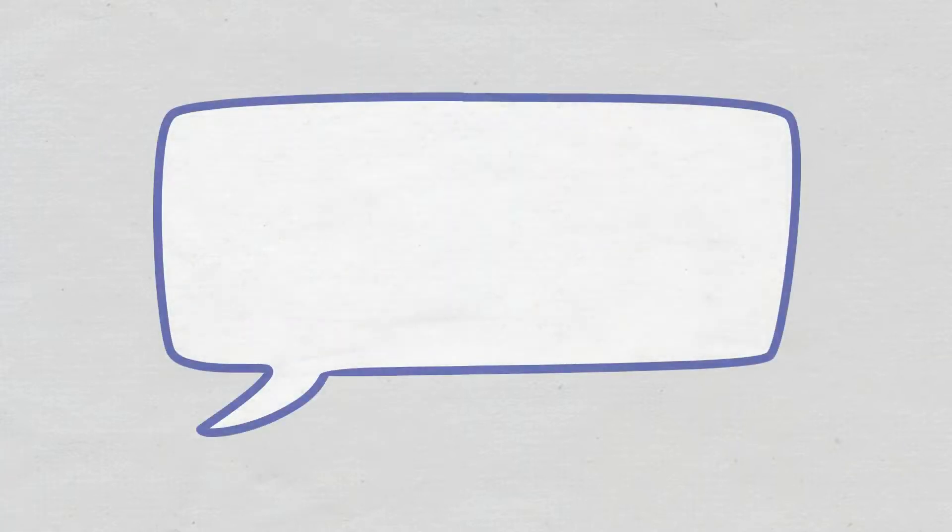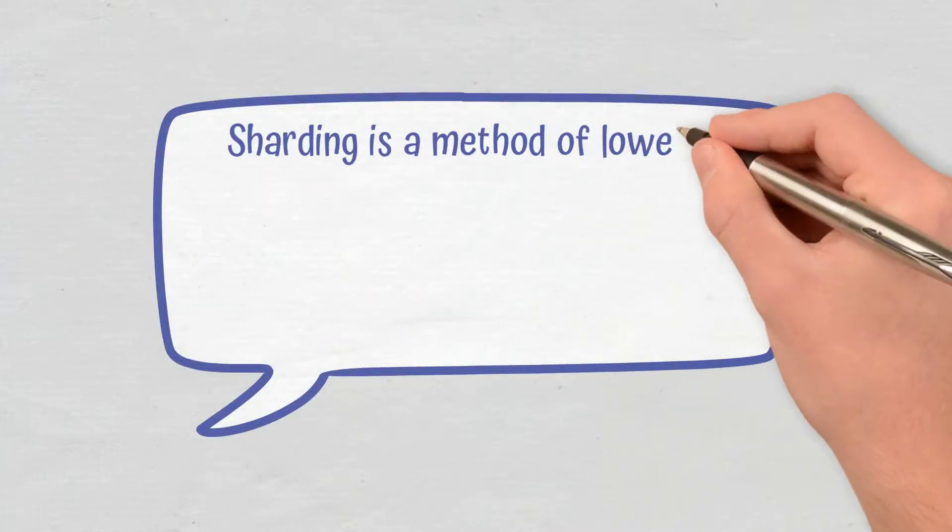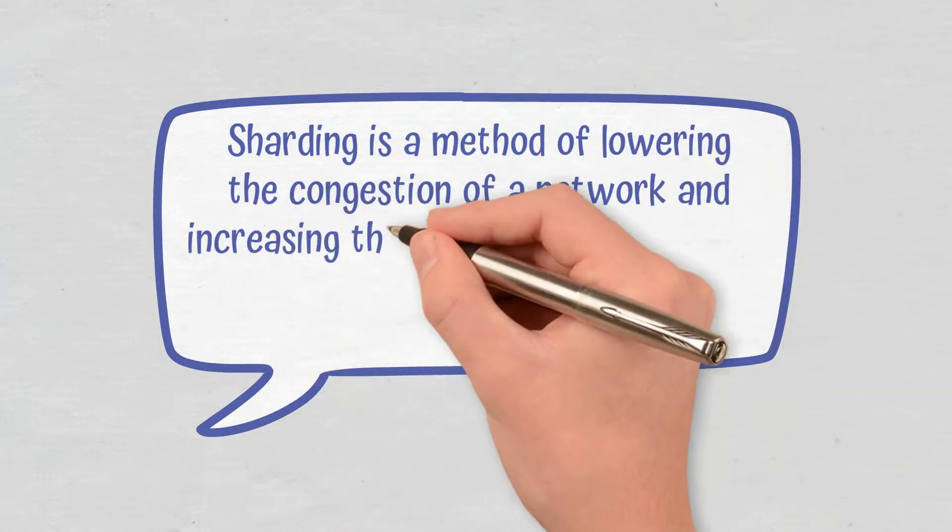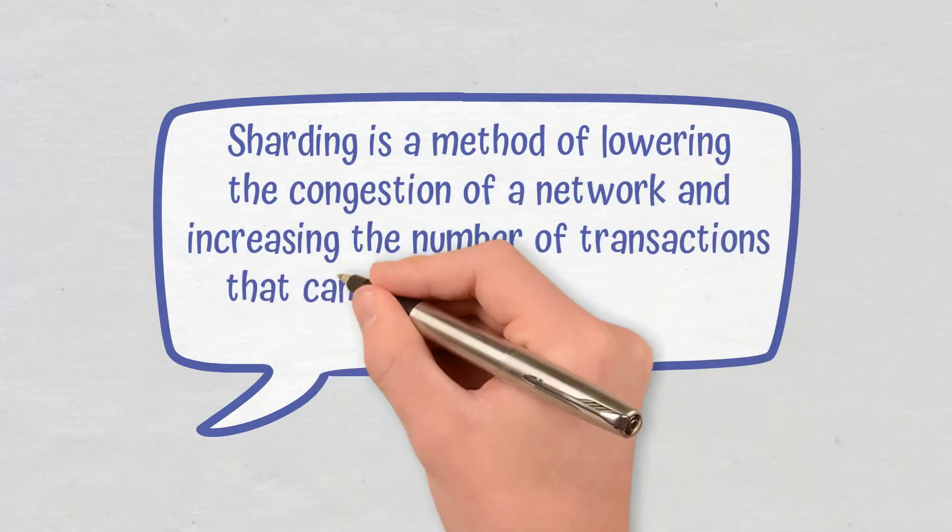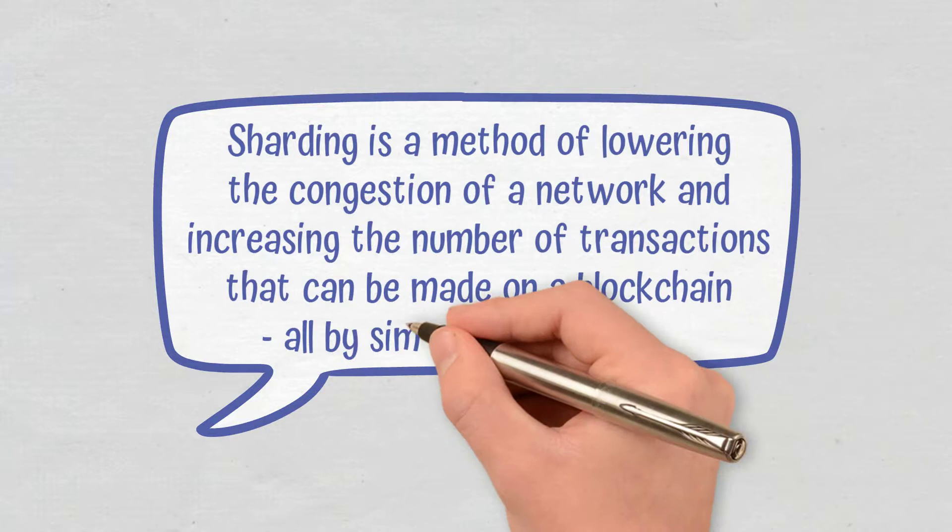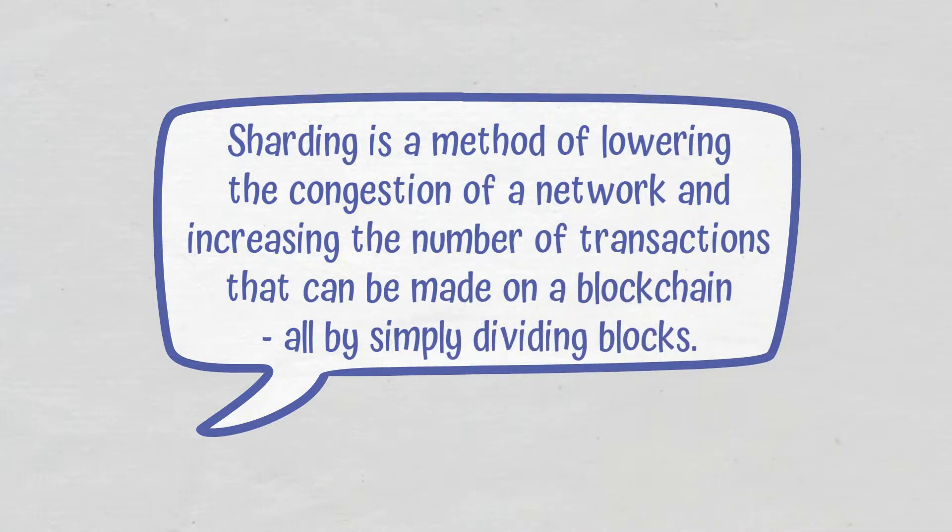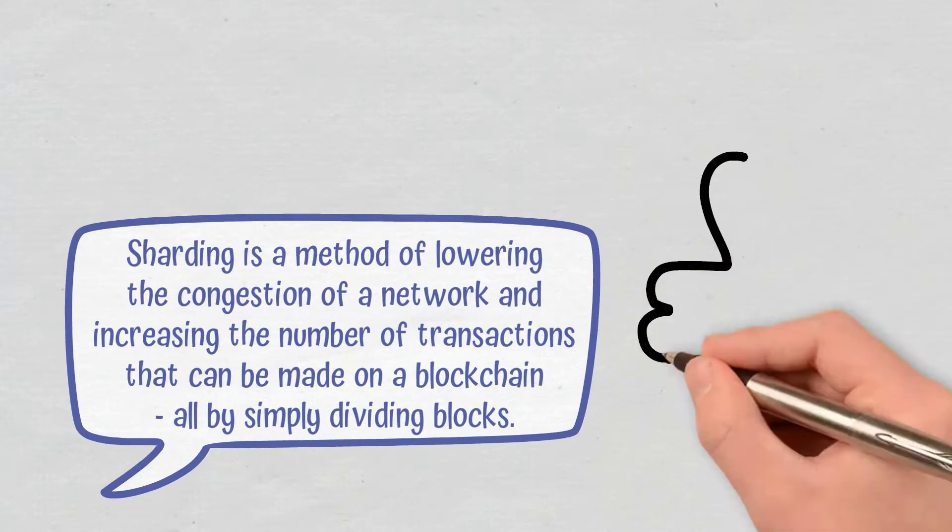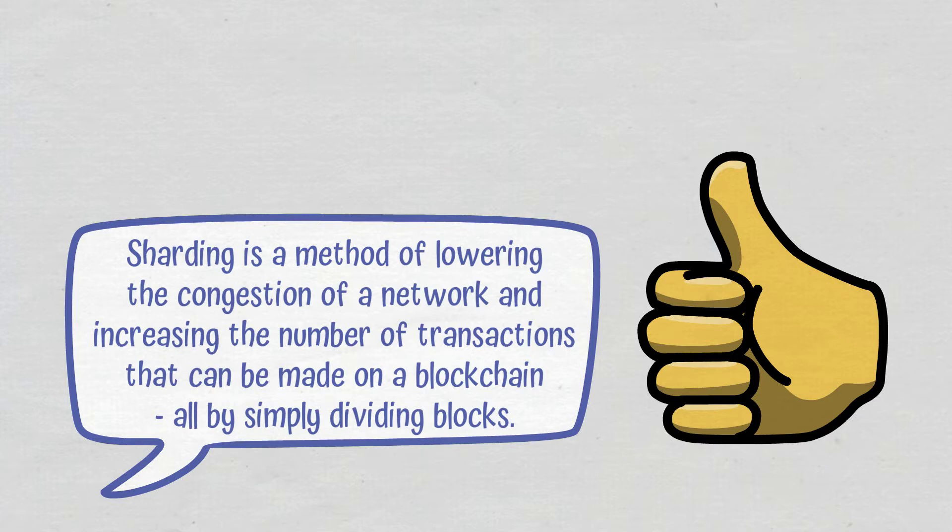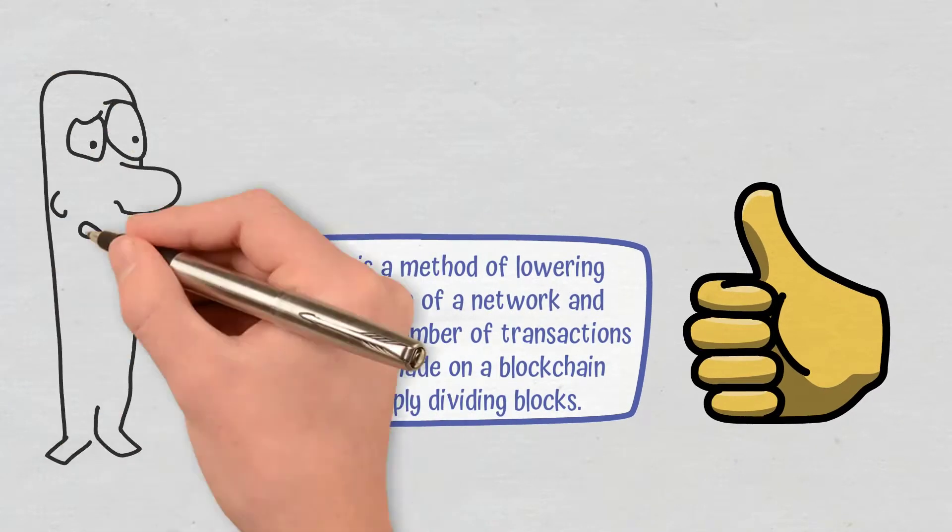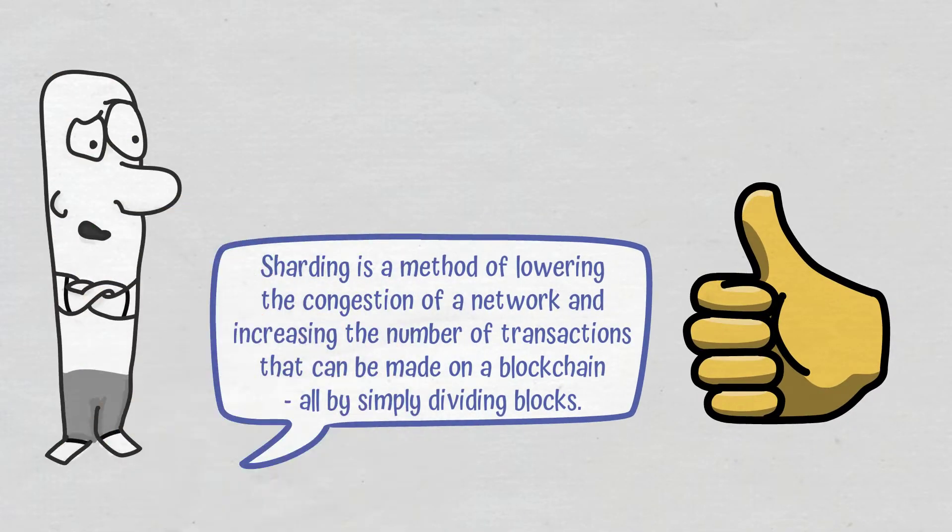Conclusions. Sharding is a method of lowering the congestion of a network and increasing the number of transactions that can be made on a blockchain, all by simply dividing blocks. While it does have some big pluses like improved scalability, it still has some downsides that need to be worked on, mainly those related to security.